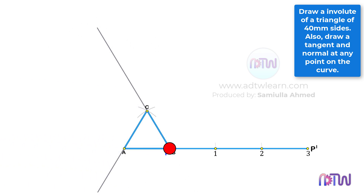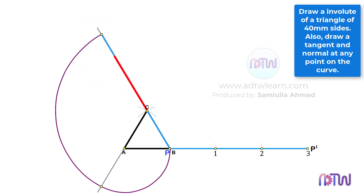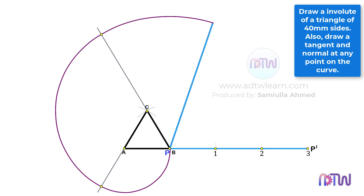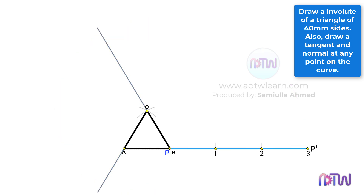Initially, point P will be here. When we unwound, point P will reach here on this line — we can see this length will be equal to the length between points 2 and 3. When we unwound the rope further, the endpoint P will reach here on this line — this length will be equal to the length between points 1 and 3. When we unwound the rope further, the endpoint P will reach here on this horizontal line. To get this curve, you can mark the lengths between points 2, 3 and 1, 3 on these lines and draw a smooth curve. Or, another simple way is this.